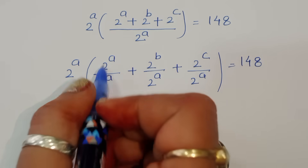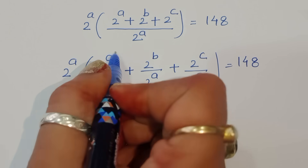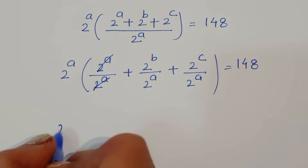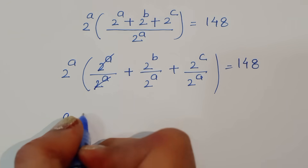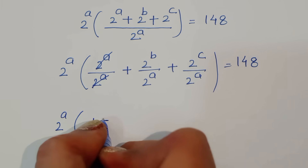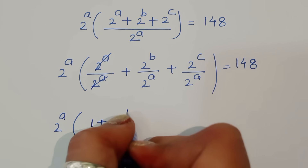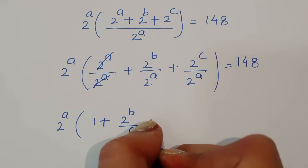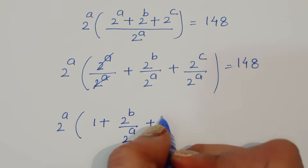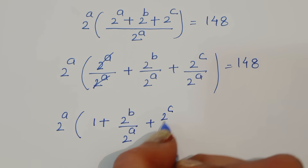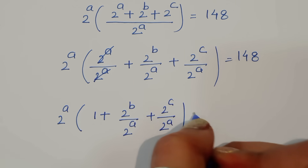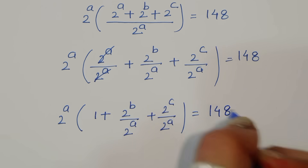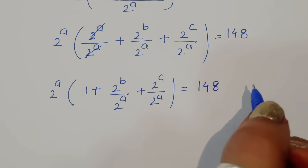Now, 2 power a divided by 2 power a will cancel. So we can write: 2 power a times (1 plus 2 power b upon 2 power a plus 2 power c upon 2 power a) is equal to 148.